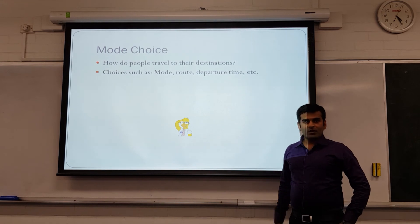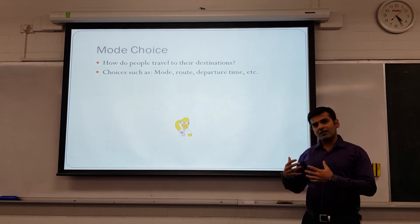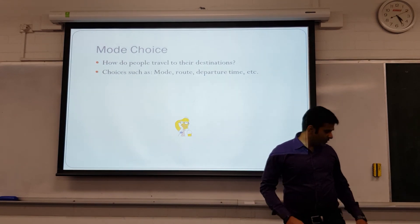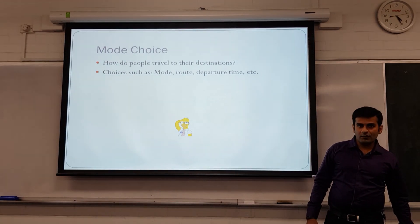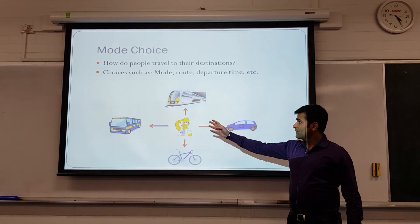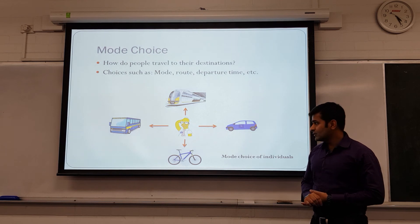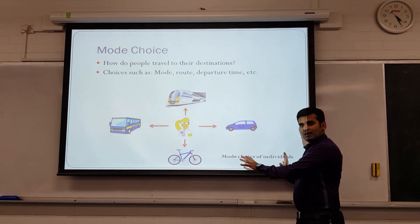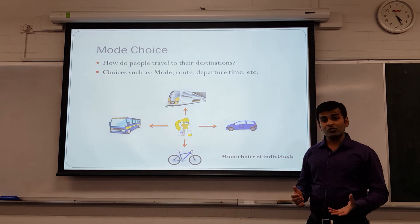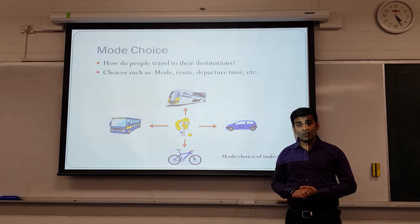Consider Homer Simpson — he is confused about whether, if he has to travel from his TAZ to zone 2, he should go by car, train, bus, or other available options. This is just an illustration of mode choice. There could be a similar illustration for route choice as well as the time of departure for the same person.